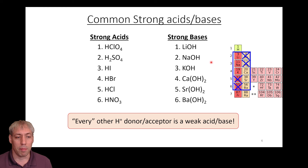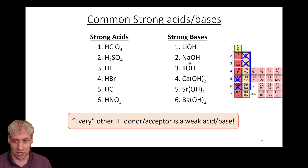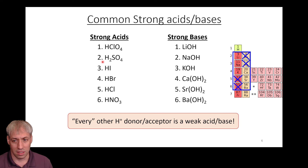It's worth memorizing these, not just for this class but also because these are the dangerous chemicals you deal with. Sodium hydroxide, for example, will turn your skin essentially to soap — it hydrolyzes the phospholipid bilayer in your skin. The most common are potassium hydroxide and sodium hydroxide. Likewise, battery acid is H2SO4, and HCl is sometimes found in cleaning solutions. It's worth knowing these strong acids and bases.